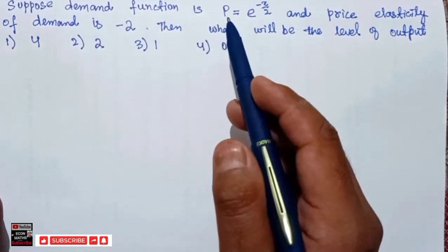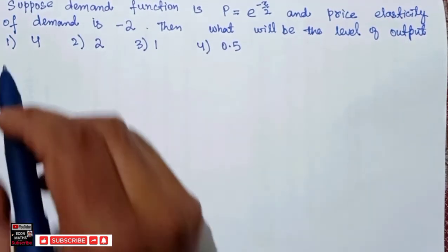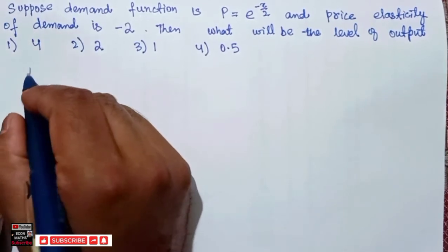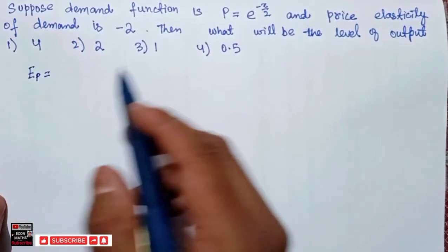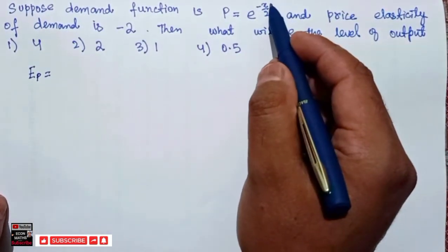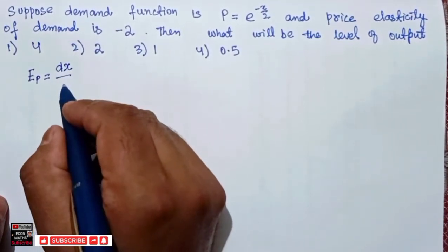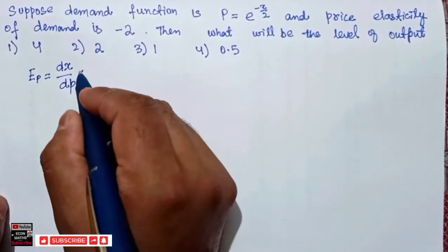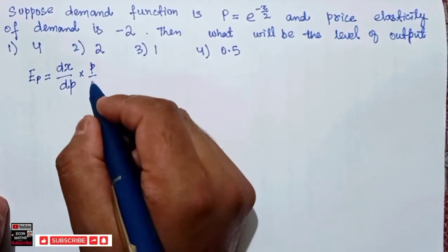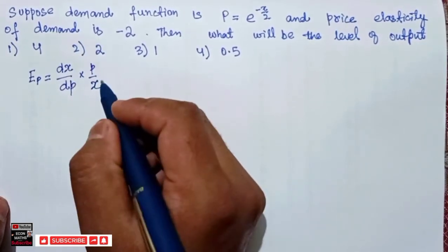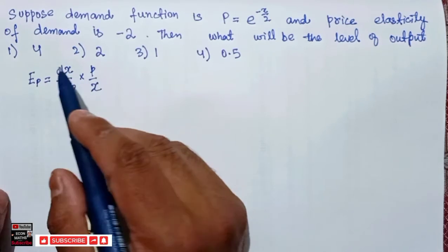We are given an inverse demand function, and we know the formula for price elasticity of demand. Price elasticity of demand is equal to dx divided by dp times p divided by q. Since x is quantity here, we use x in place of q.